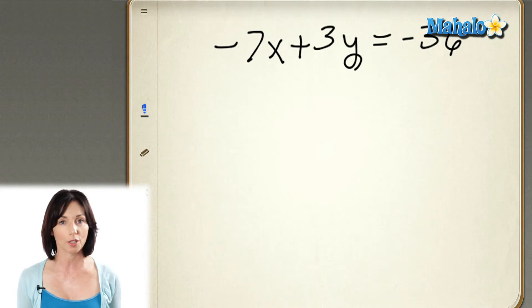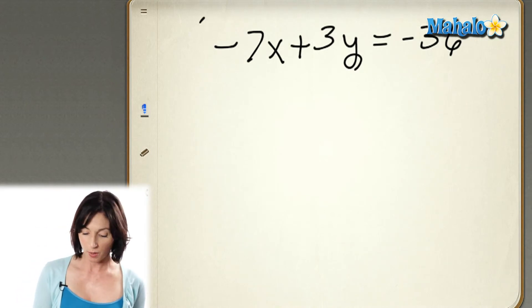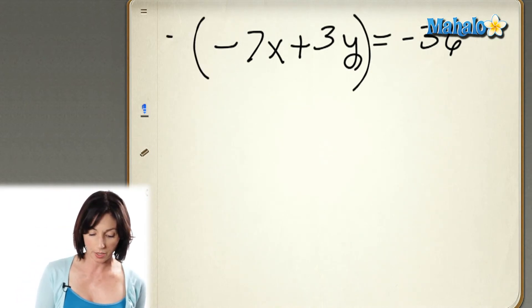You can do anything you want to the equation as long as you do it to both sides. So I'm going to multiply both sides of this equation by negative 1.